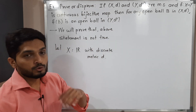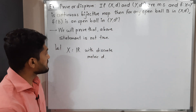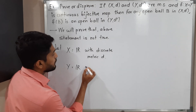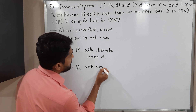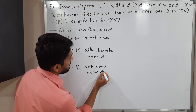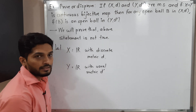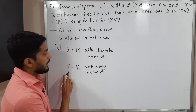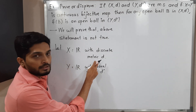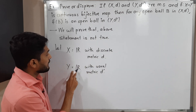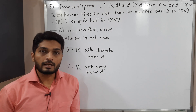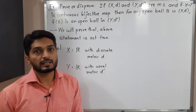We want yd dash as well — one more metric space. Let us consider y. My y is also r, but with the usual metric d dash. Its definition is d dash of xy is equal to mod x minus y.